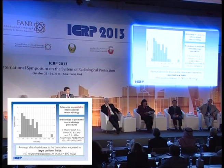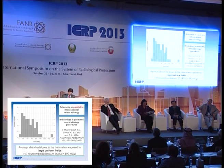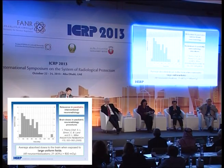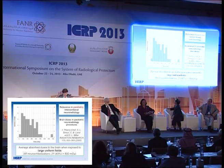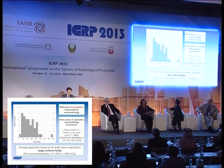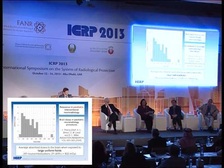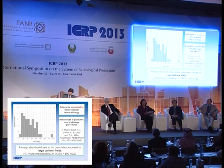For pediatric interventional procedures, we used published data from 2008 with colleagues in the United States and France — a detailed analysis of 49 neuroembolization procedures originally published to analyze cancer risk. We used the data to look at the range of doses and whether they exceeded 500 milligrays (0.5 grays) in pediatric procedures. If there is no collimation — which unfortunately is still part of practice for many clinicians — 43% of this sample of 49 neuroembolizations have doses higher than 500 milligrays.